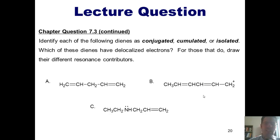I want you to identify each of the following dienes as conjugated, cumulated, or isolated. Which of these dienes have delocalized electrons, and for those that do, draw their different resonance contributors. I'm going to show you the answers momentarily, but if you wish, you could pause the video now and attempt to do them on your own.